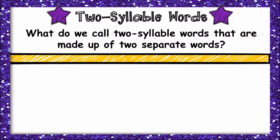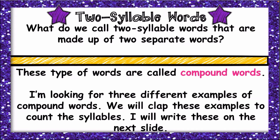What do you call two-syllable words that are made up of two separate words? This type of words are called compound words. We've talked about compound words where two-syllable words come in two separate words. Now I'm looking for three different examples of compound words. We will clap these examples to count the syllables.